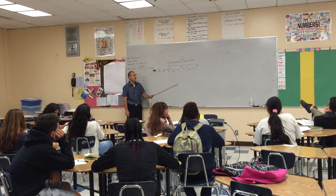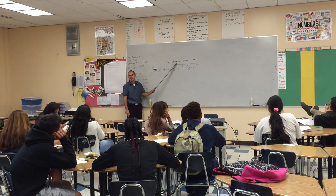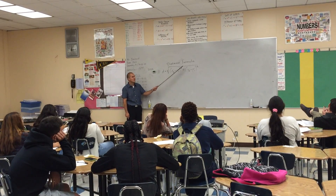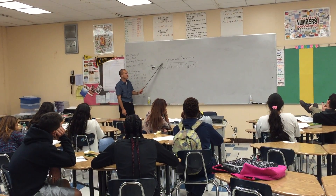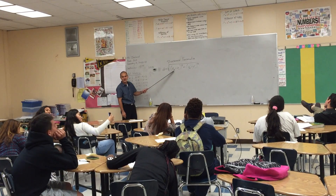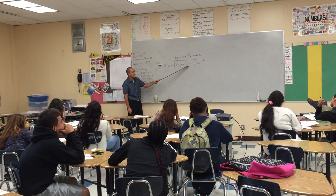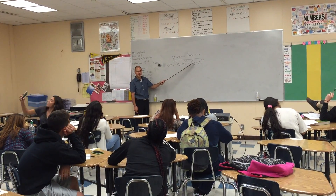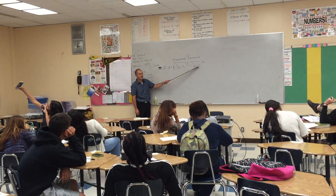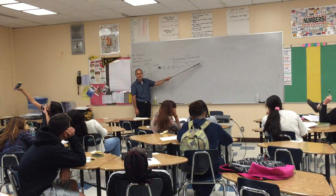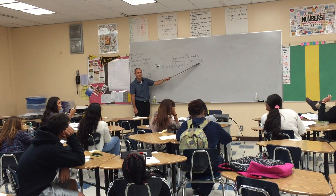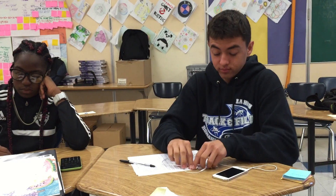Okay class, today's lesson is on the distance formula. The distance formula is d is equal to the square root of parentheses x sub 2 minus x sub 1 squared, plus parentheses y sub 2 minus y sub 1 squared. That is the distance formula. Any questions?